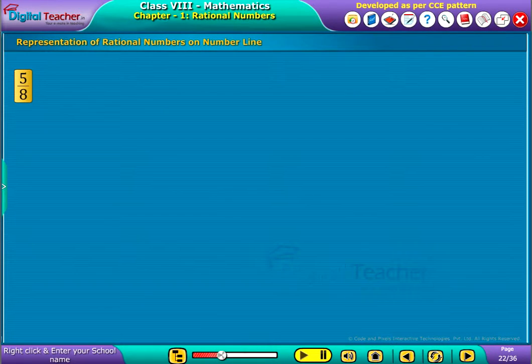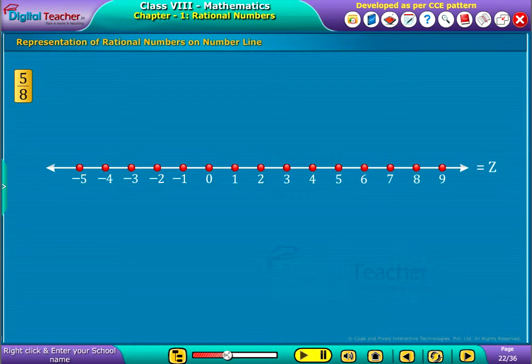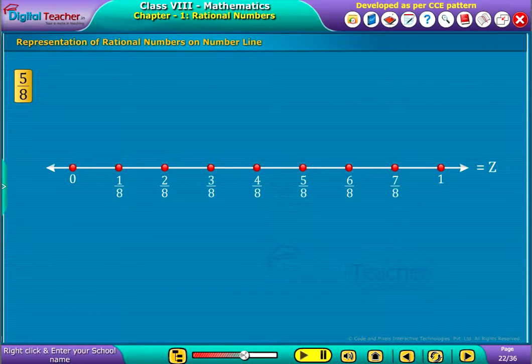Let us see how we can represent it on a number line. Consider a number line and mark 0 and 1 as shown on the screen. Let us divide it into 8 equal parts and mark them as shown on the screen.